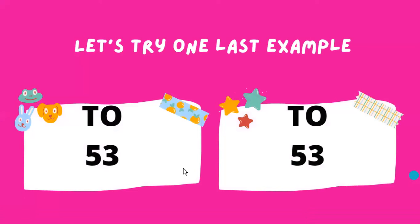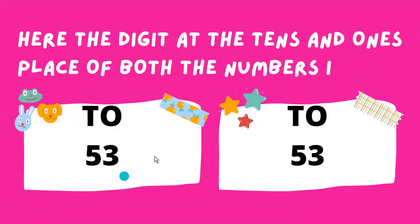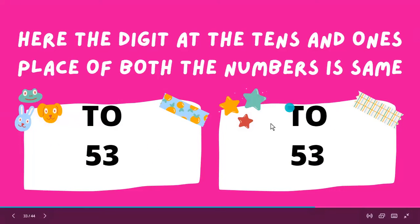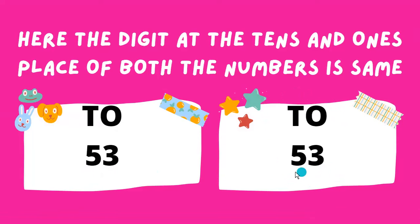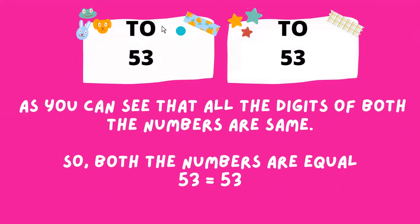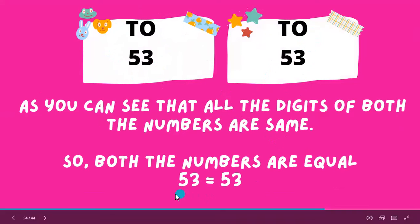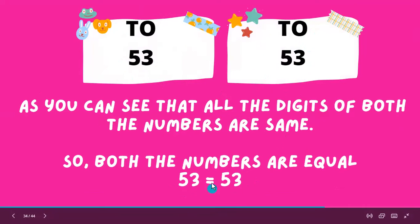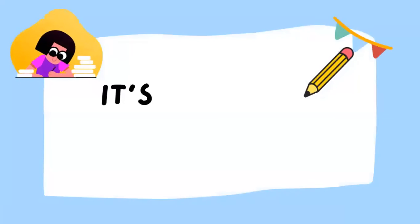Let's try one last example. Let's compare 53 and 53. Here the digits at both the tens and ones place of both numbers are the same. As you can see, all the digits of both numbers are the same, so both numbers are equal. We can also write this using the equal to sign: 53 is equal to 53.